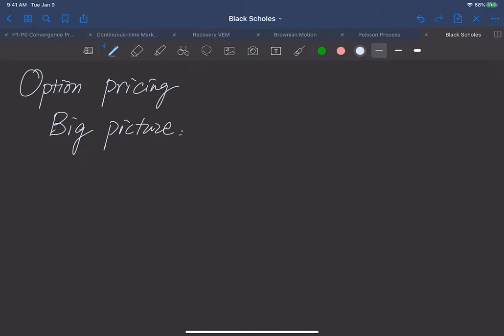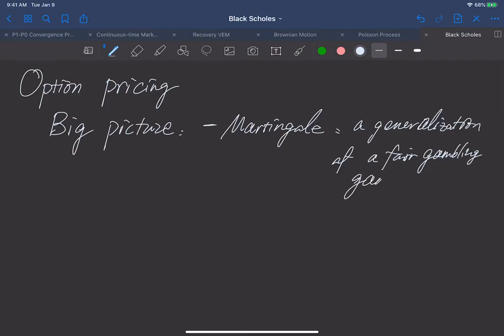Let's first look at the big picture before we enter any technicalities. The big picture is we need two fundamental tools, and then we'll learn the model which won two guys a Nobel Prize. The first one is we'll learn some stochastic process called martingale. The name is kind of funny but it's from French and it's a generalization of a fair gambling game.